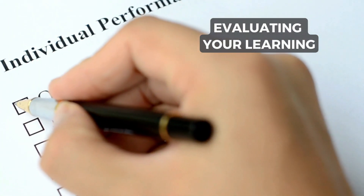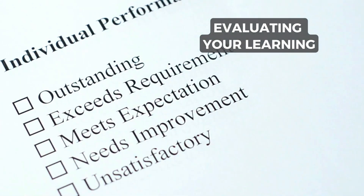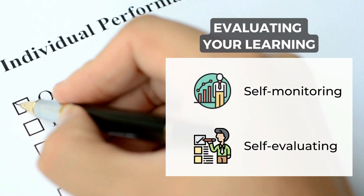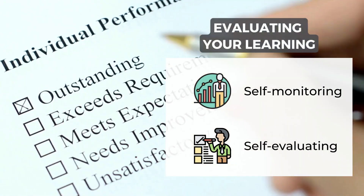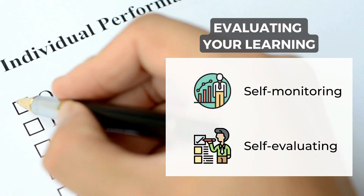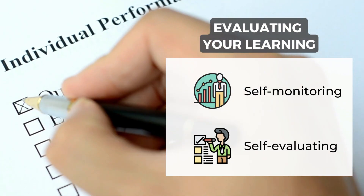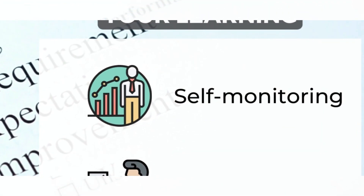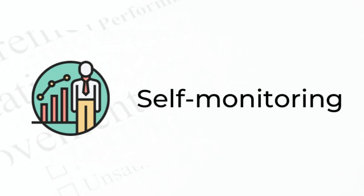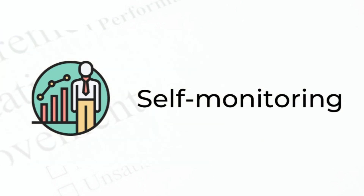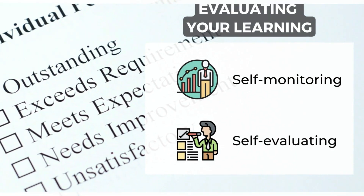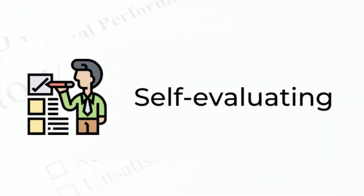Evaluating your learning includes two related strategies that aid learners in checking their language performance: one strategy involves noticing and learning from errors, and the other concerns evaluating overall progress. Self-monitoring means identifying errors in understanding or producing the new language, determining which ones are important, tracking the source of important errors, and trying to eliminate such errors. Self-evaluating means evaluating your own progress in the new language — for instance, checking to see whether you are reading faster and understanding more now than one or six months ago.